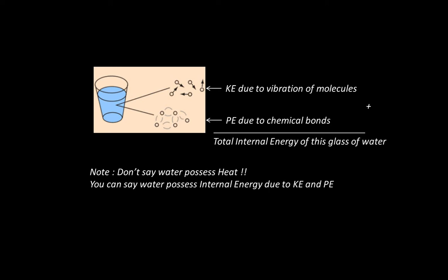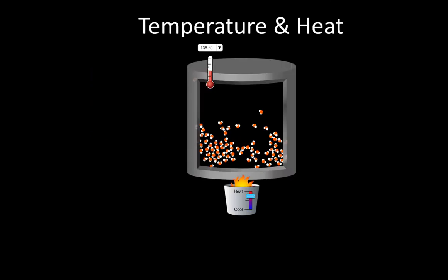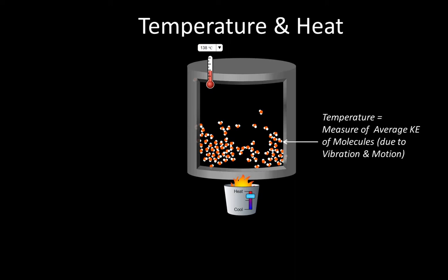So with that misconception aside, let's look at the idea of temperature and heat. Here is an image from a PHET simulation. We are heating a vessel with molecules of water that are all vibrating. Temperature is a measure of the average kinetic energy of molecules due to vibration and motion. The more these molecules are vibrating and moving faster, the higher the temperature. Note the word 'average' kinetic energy — not every molecule has the same kinetic energy; it's the average we are interested in.